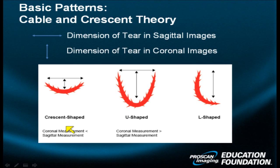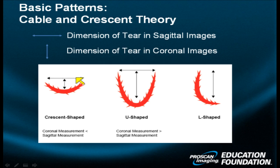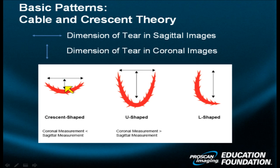Here are the three basic shapes looking from the top down. The anteroposterior dimension is depicted from side to side. The medial-lateral or retraction dimension is illustrated on the crescent-shaped tear — less retraction, cable-dominant. The U-shaped tear shows greater retraction in a crescent-dominant shoulder. And then the L-shaped tear involves only part of the tendon.